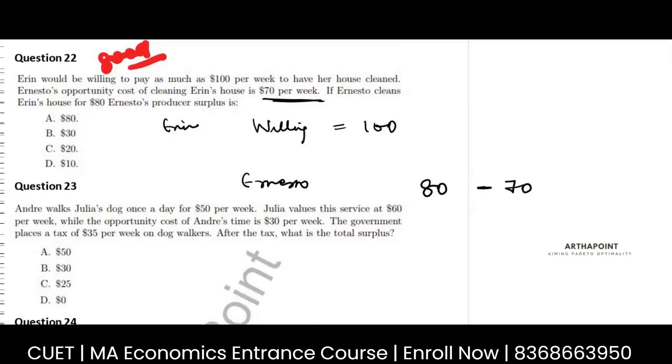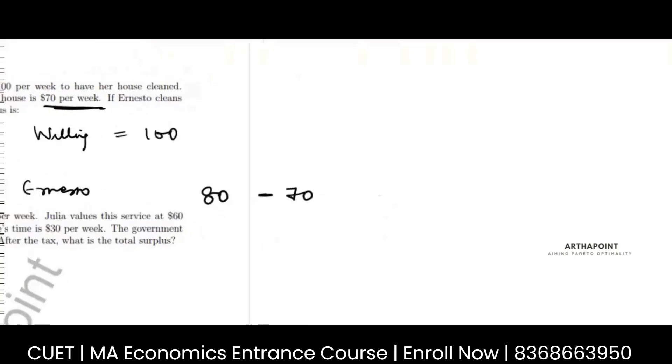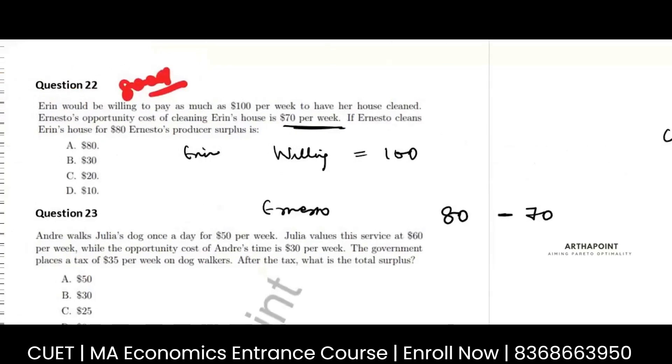Ernesto's producer surplus, just see here. Consumer surplus by definition is defined as willingness to pay minus the amount paid. So here she was willing to pay as much as 100, she just paid 80 for the services. So 100 minus 80, this is 20. This is consumer surplus.